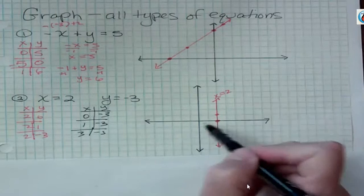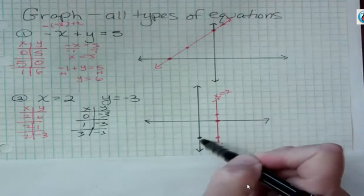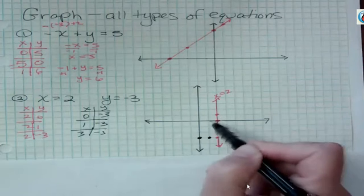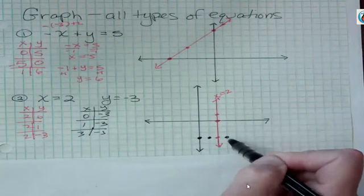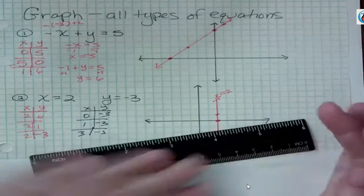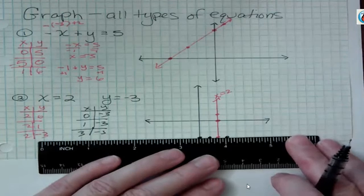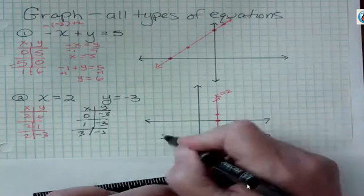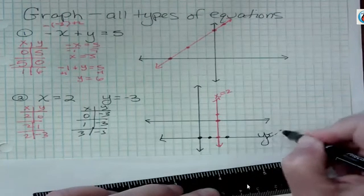If x is 0, y is negative 3. If x is 1, y is negative 3. If x is 3, y is negative 3. And in fact, y is always negative 3, and that leads us to a horizontal line at negative 3.